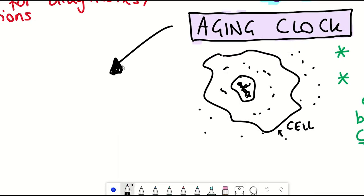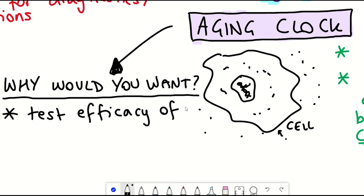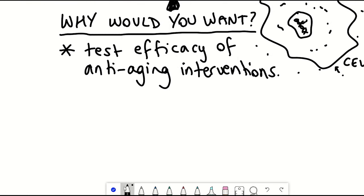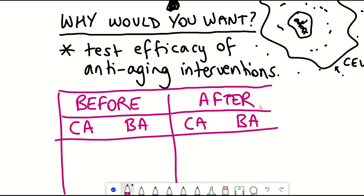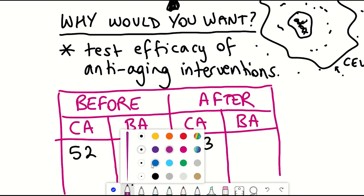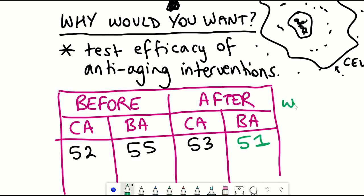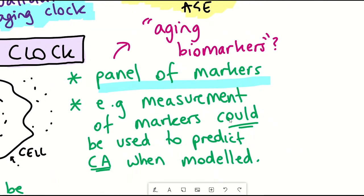Well effectively here using aging clocks you're predicting chronological age from biological aging biomarkers. So to give an example one hopeful use of these different aging clocks is to be able to test the efficacy of different anti-aging interventions. And so you can then test the intervention and measure some biomarkers to predict the age that the clock gives you and then compare that to the actual chronological age. And so the inferred chronological age from these aging clocks is effectively the biological age.